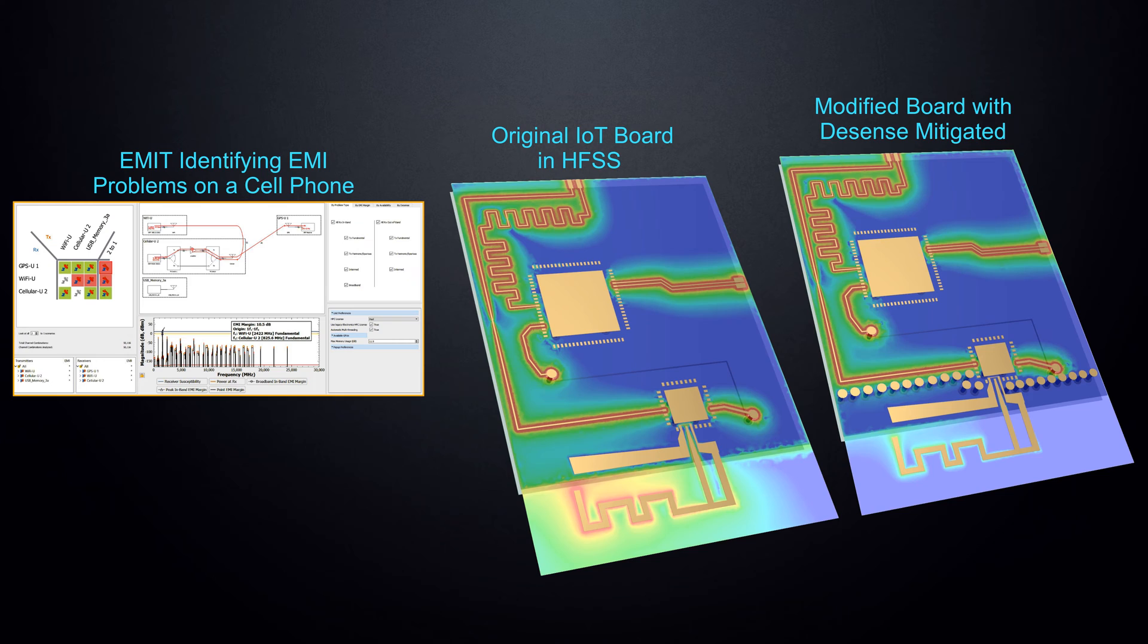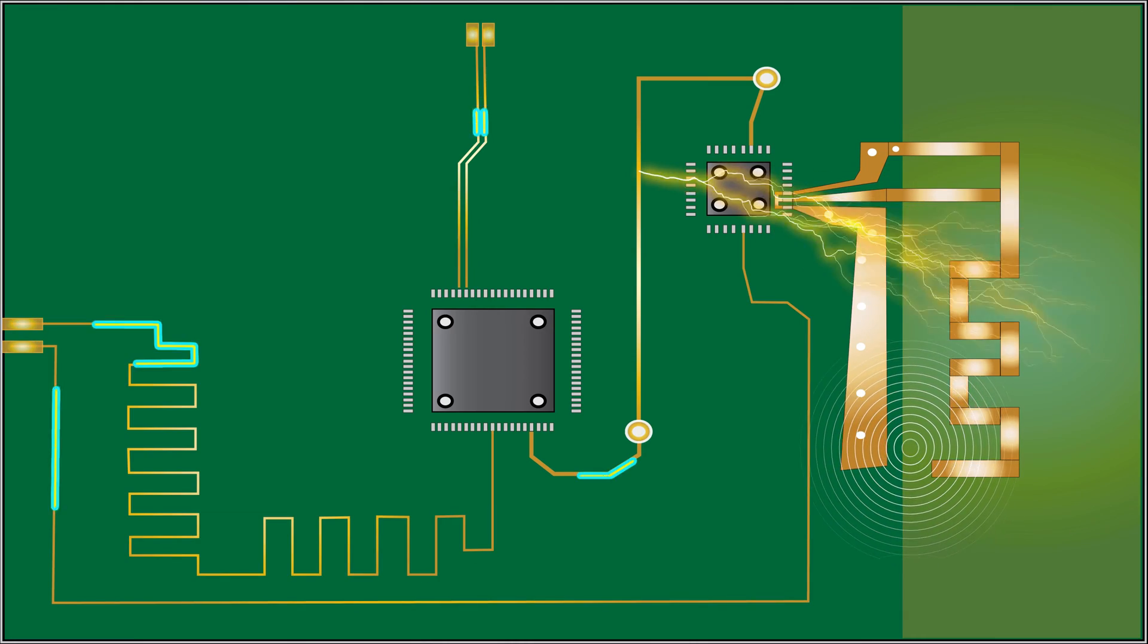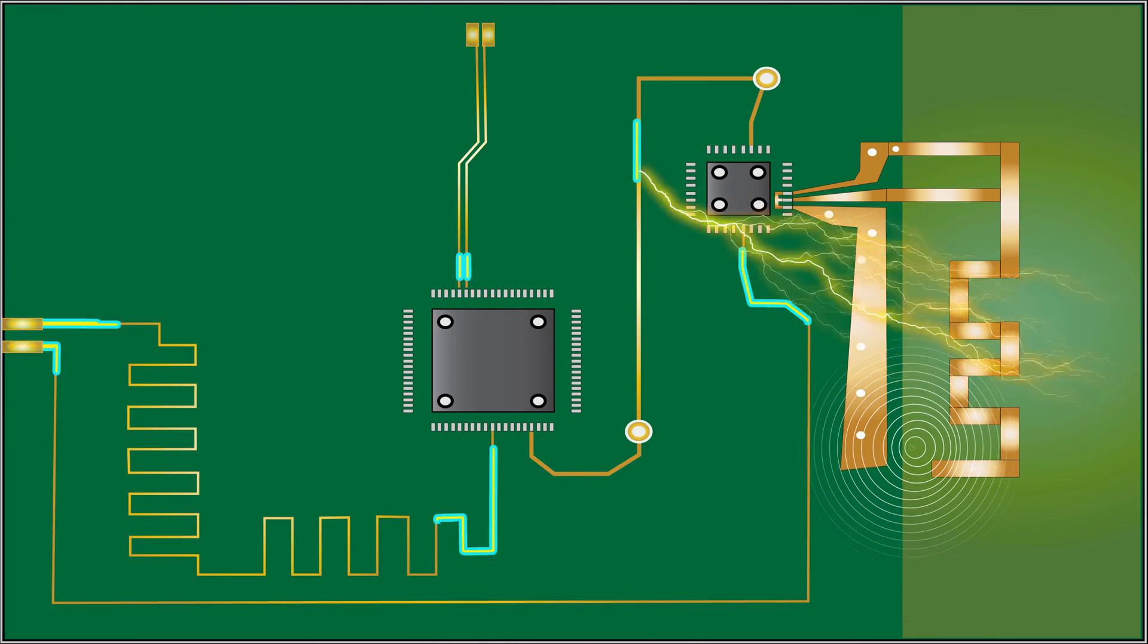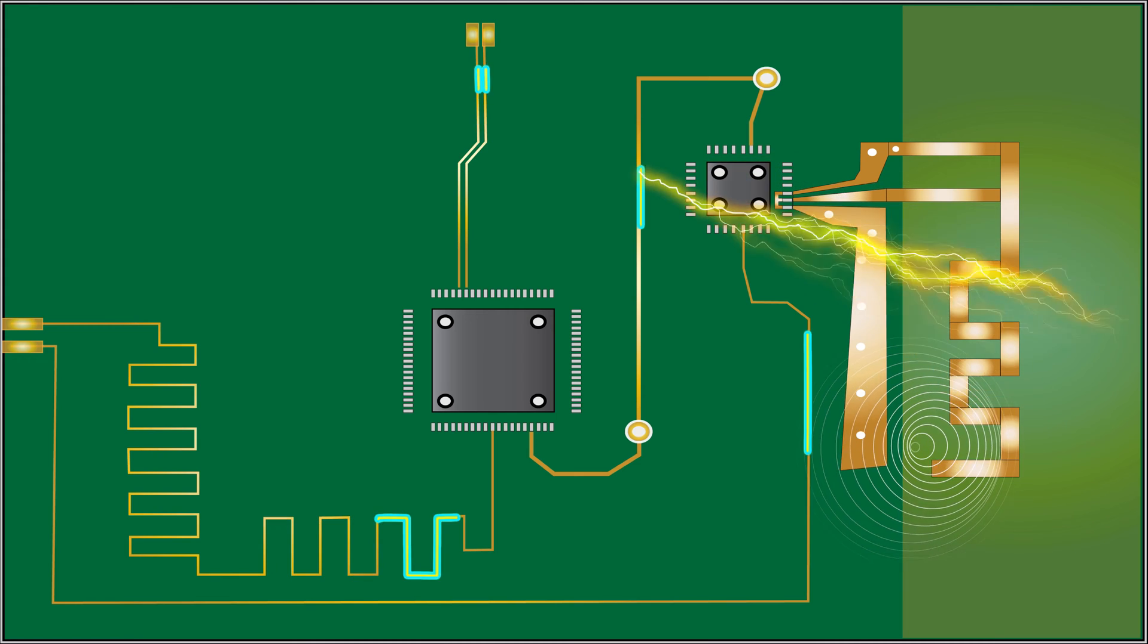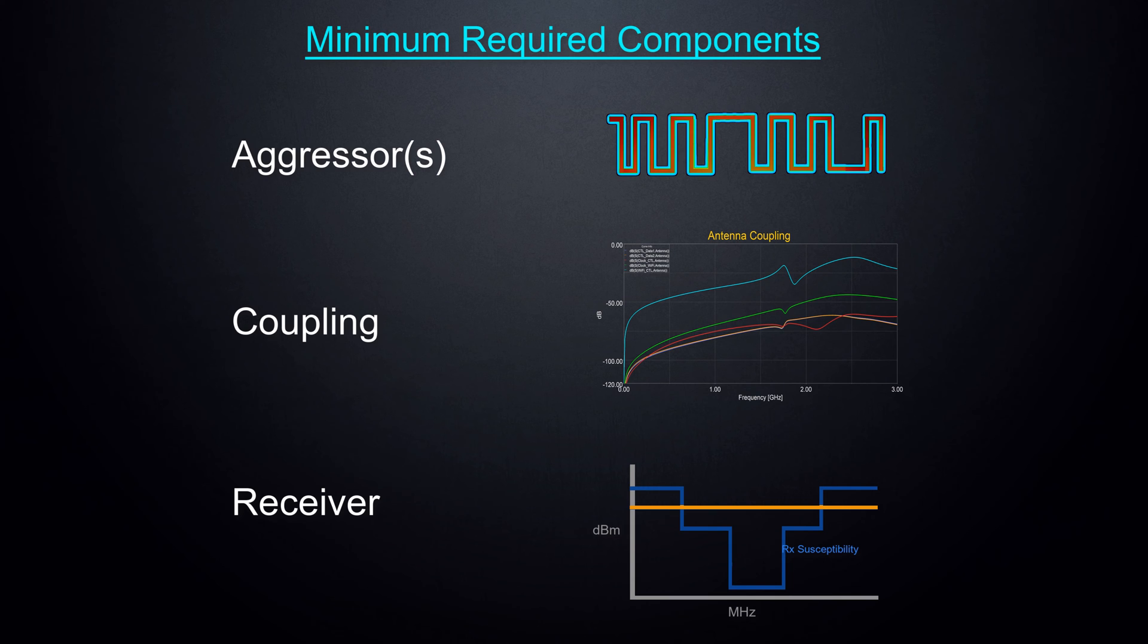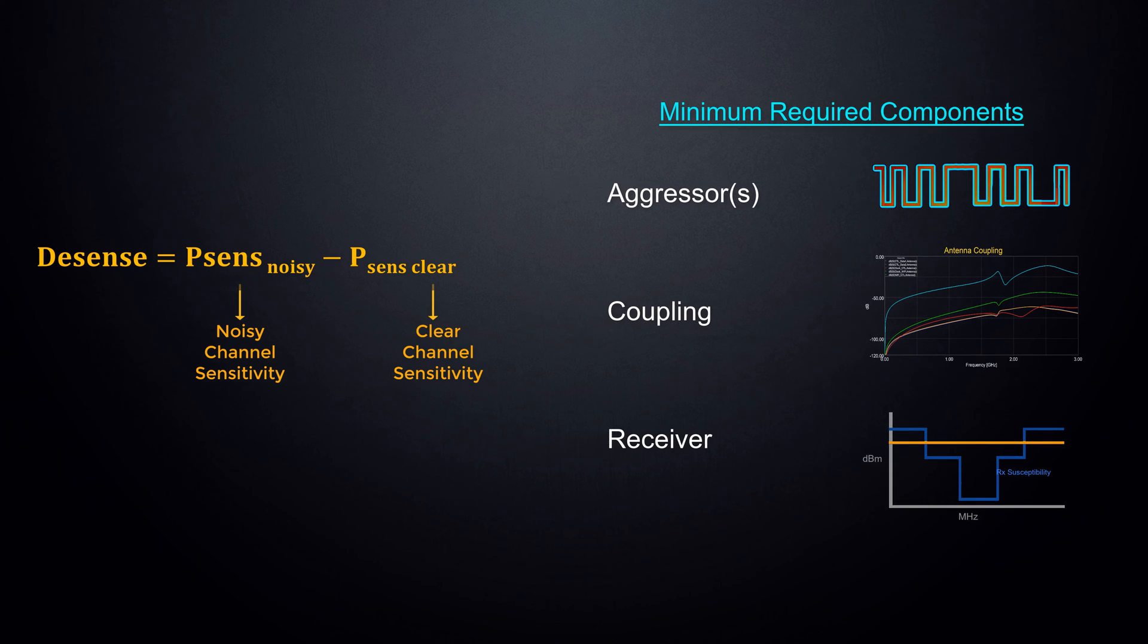ANSYS EM tools can help engineers diagnose and mitigate the problem of RF Desense and Coexistence. In part one, we'll learn about radio frequency interference, RF Desense, and Coexistence. We'll discuss the minimum required components for a Desense analysis, our simulation technique to characterize them, and power flow analysis used to quantify RFI and Desense.